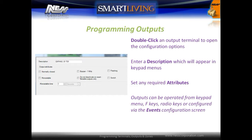To program outputs, double-click on an output terminal to open the configuration options. Assign a description for the output and set any attributes required. Outputs can be operated from the keypad menu, from function keys, radio keys, or configured via the events configuration screen.